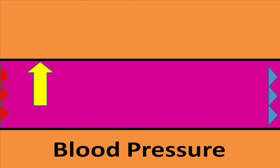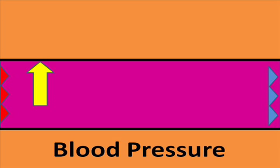The force of the blood pressing out against the walls of the capillary will be represented with a yellow arrow. This pressure is a type of hydrostatic pressure. As blood moves through the vessels of the body, this pressure is gradually diminished.